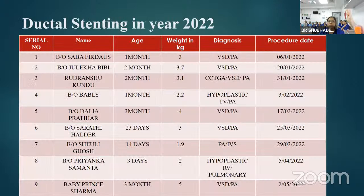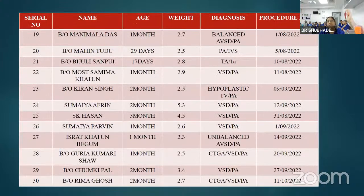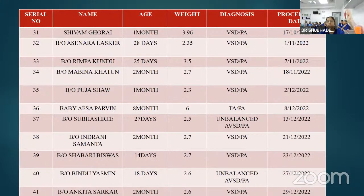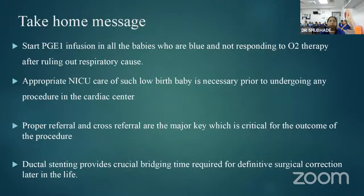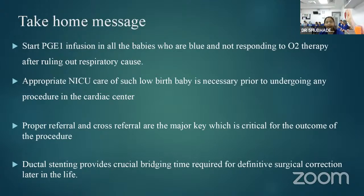Early diagnosis and robust enrollment under the government scheme ensures treatment at affordable cost. The smallest baby treated weighed 1.9 kg. Take-home messages: start prostaglandin infusion in all blue babies not responding to oxygen after ruling out respiratory causes. Appropriate NICU care prior to procedure is essential. Proper referral and cross-referral are critical for the outcome. Ductal stenting provides a crucial bridging time for definitive surgical correction later. Thank you.